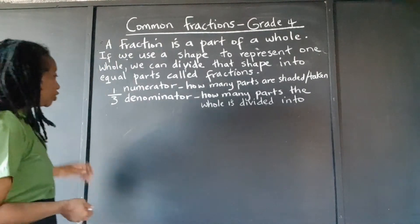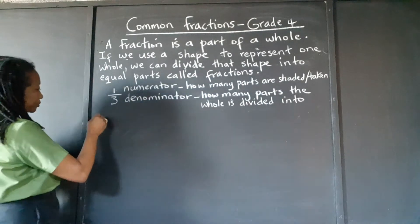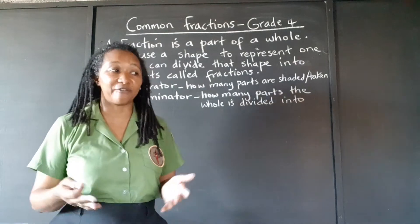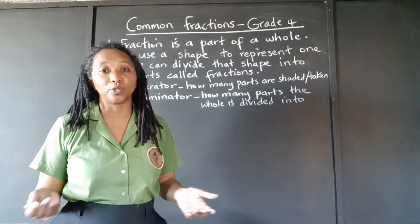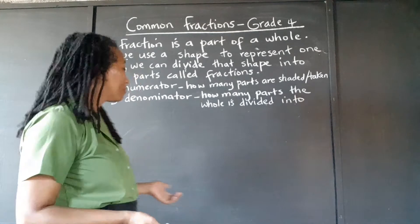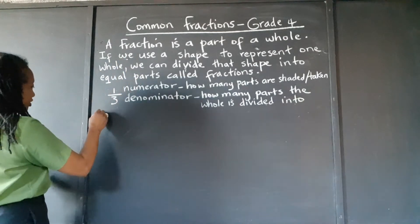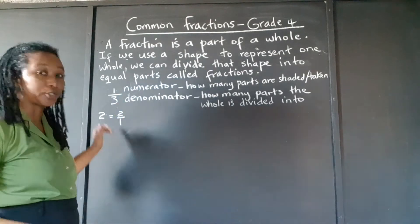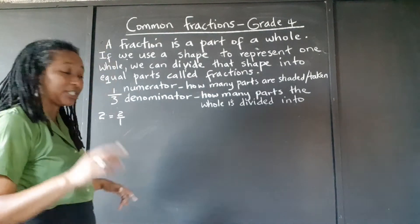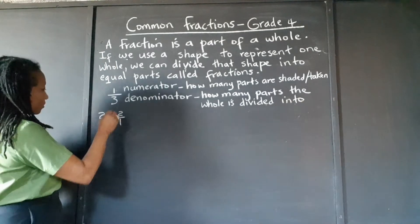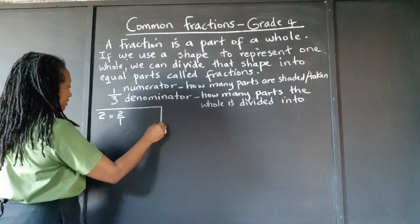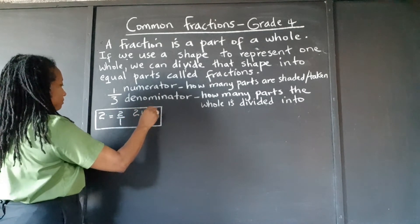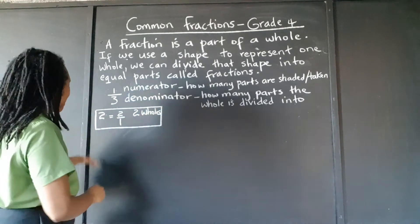Any whole number can actually be written as a fraction. So even if we're talking about two, we can write it as two over one, which is two wholes. Just bear that in mind. So let's look at the common fractions.